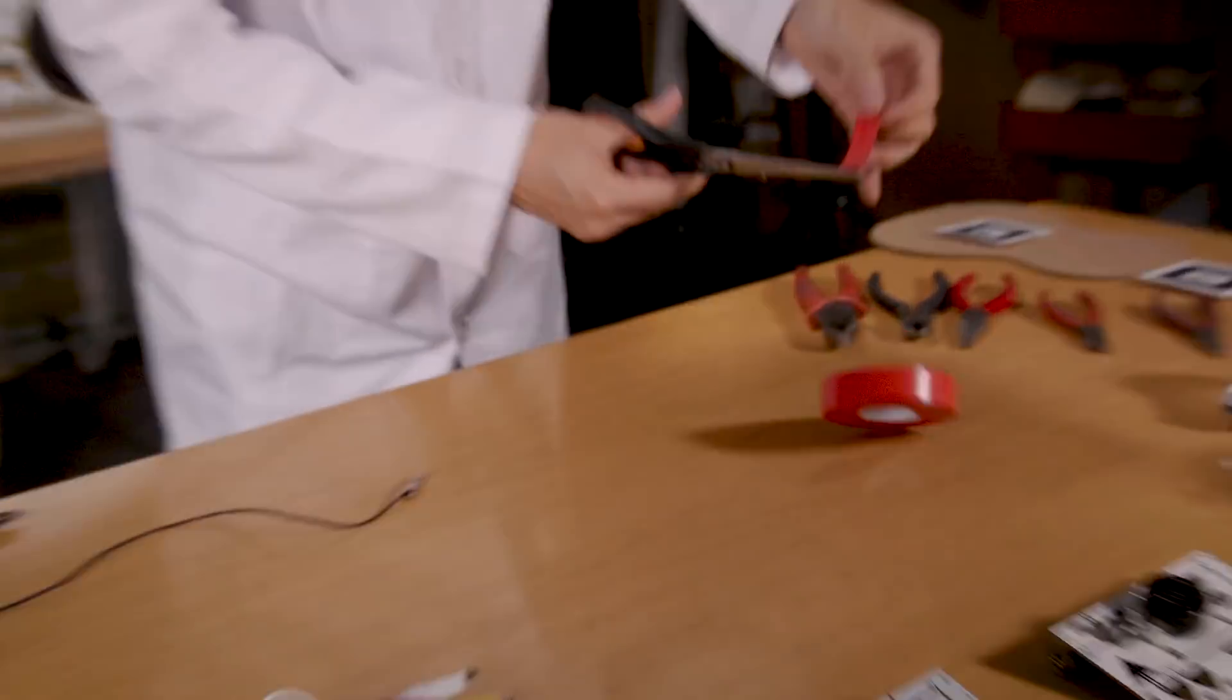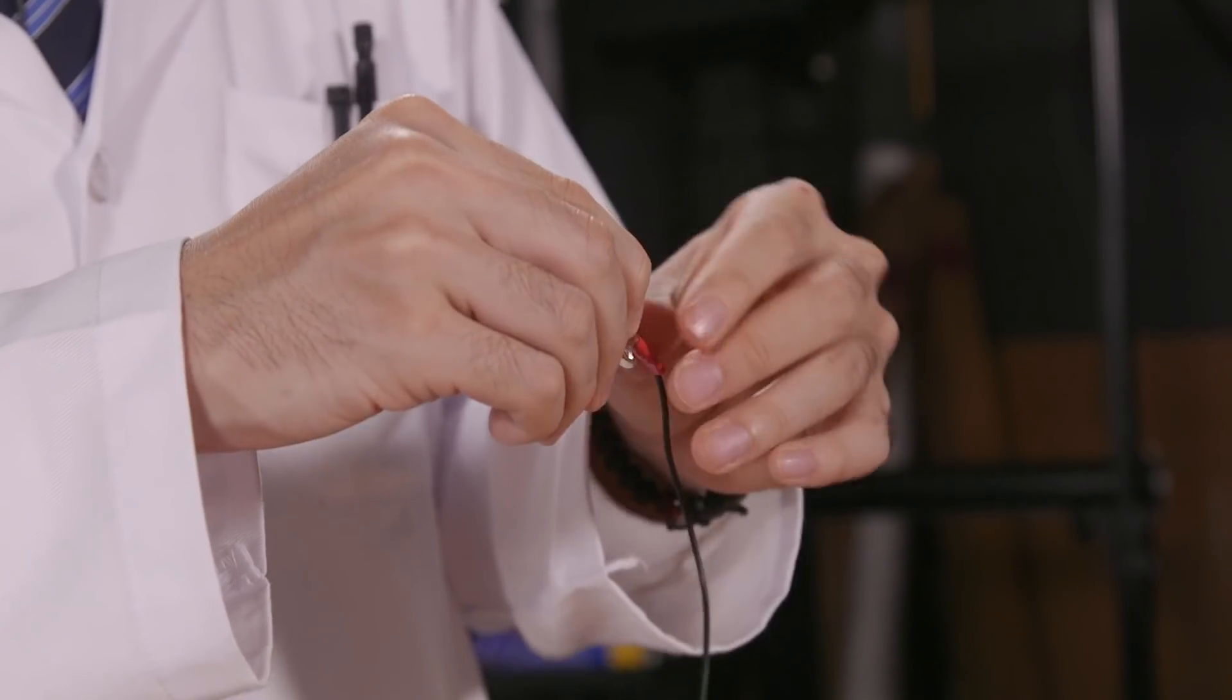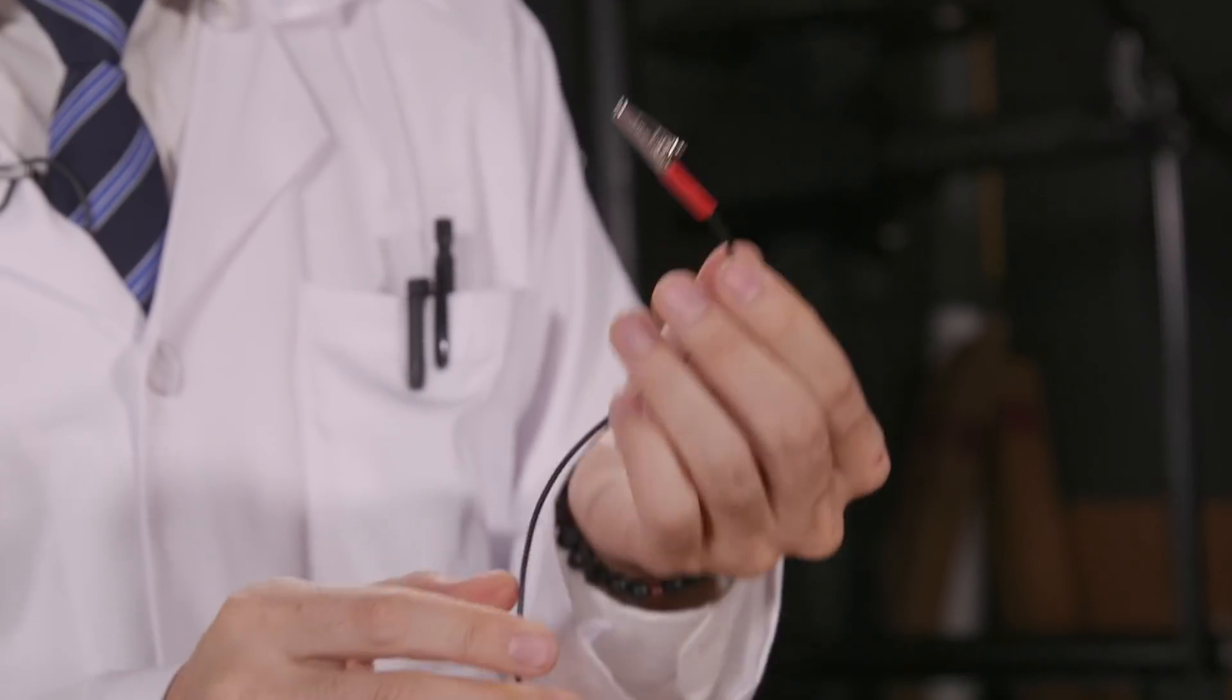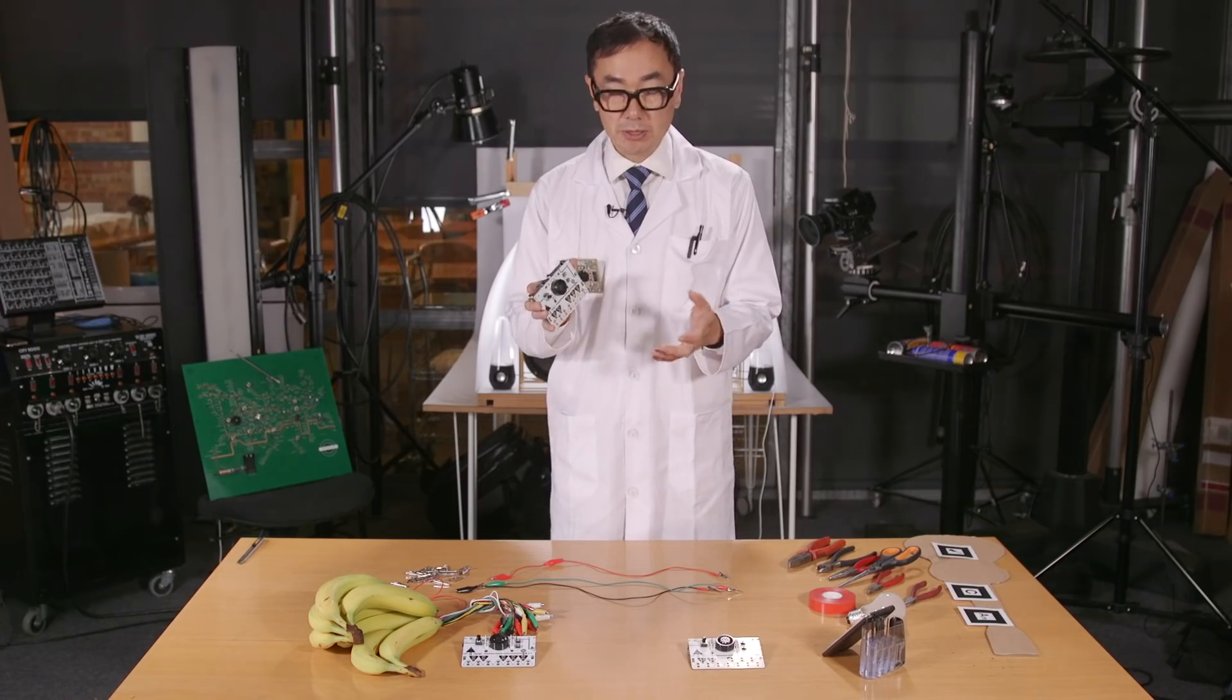Make sure to wrap the cable around the crocodile clip. Make sure you don't directly touch copper wires to avoid electric shock. For this project, we're using an Ototo piano circuit made by Yuri.